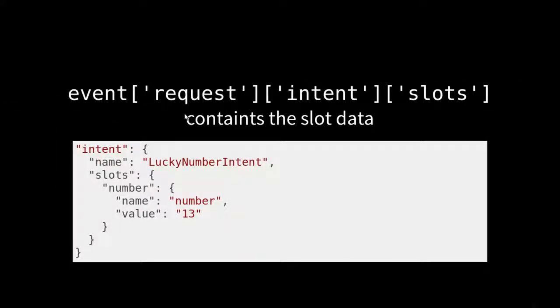Remember previously we had those nested dictionaries. This is what it's going to look like when someone uses that intent, this is what's going to be given to us in that event data. Here's the intent. There is a slots key here. And there's a number like we made earlier. It's got a name of number and then a value.